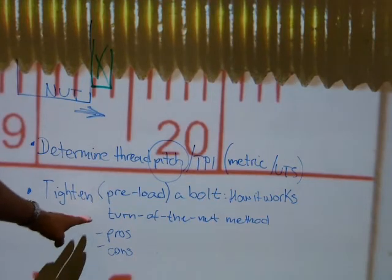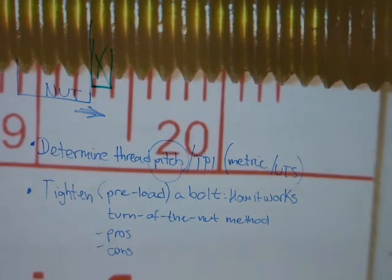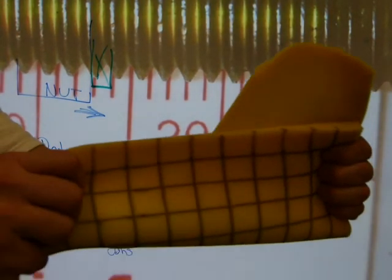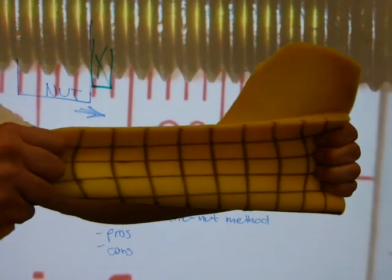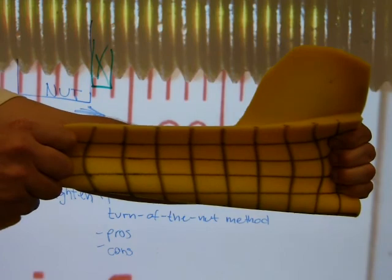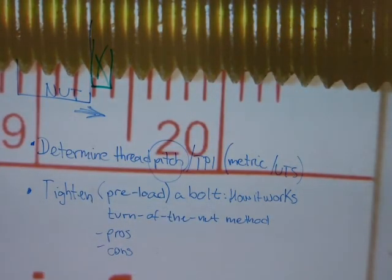On the job site in construction and working on steel beams, the turn of the nut method works very fine. And like I said, if you exceed the specifications, instead of a quarter turn, you go half a turn, the more and more you turn, the greater and greater force you exert on the bolt and it will stretch longer and longer. So, that would be its pros and cons.